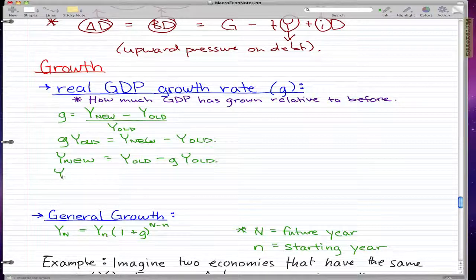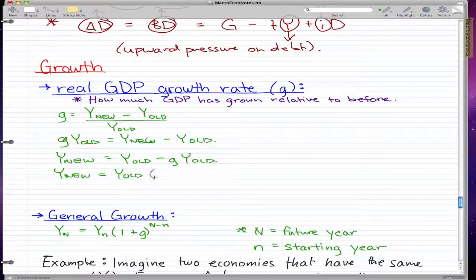And this is equal to Y new equals Y old times 1 plus G. And that is just factoring out Y old.